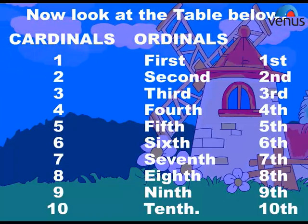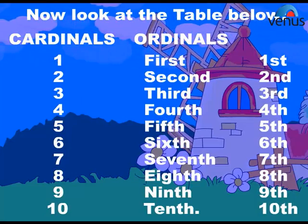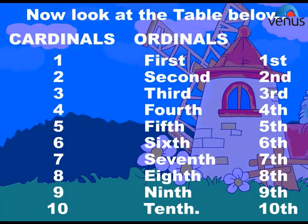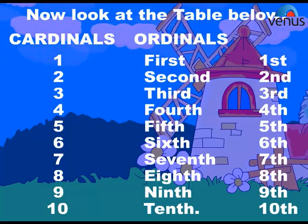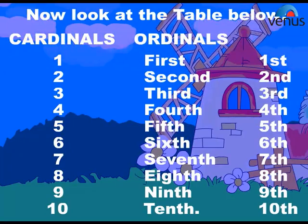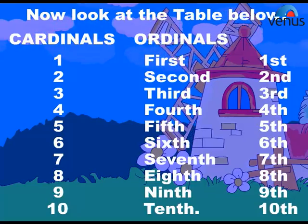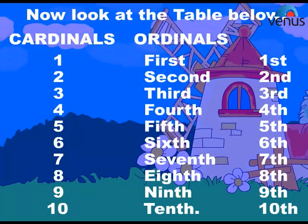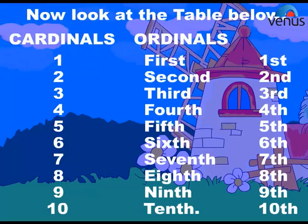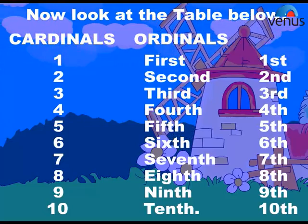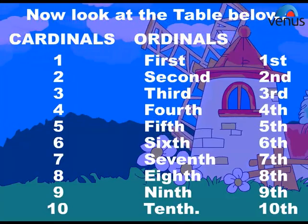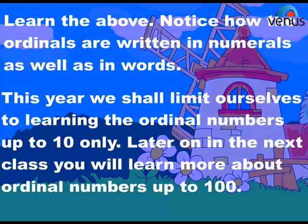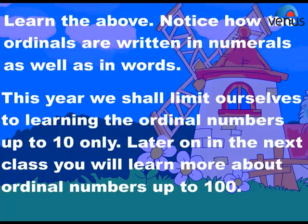Now look at the table below. Cardinals: one, two, three, four, five, six, seven, eight, nine, ten. Ordinals: first, second, third, fourth, fifth, sixth, seventh, eighth, ninth, tenth. Learn the above and notice how the ordinals are written in numerals as well as in words.